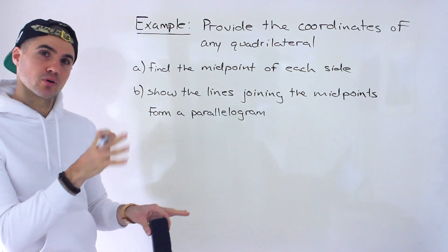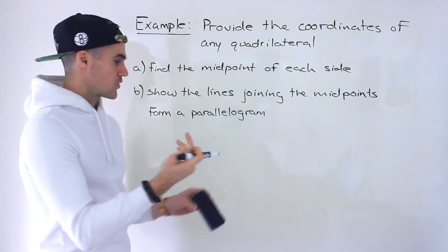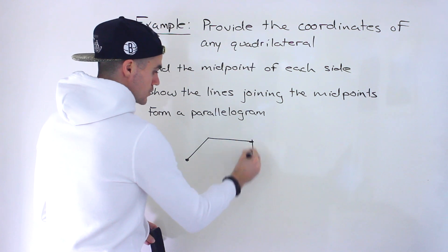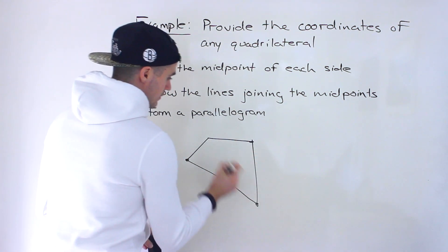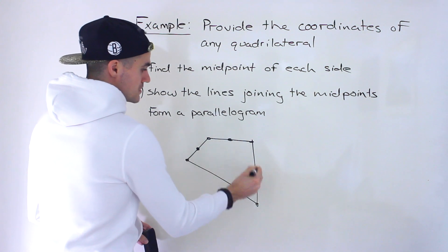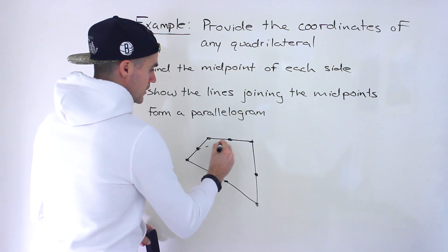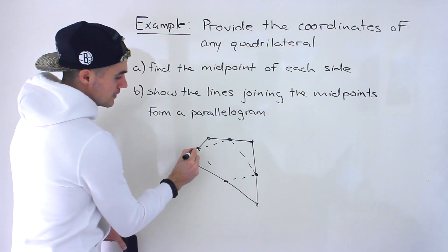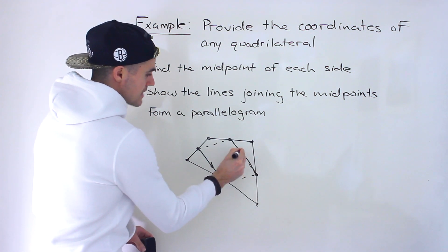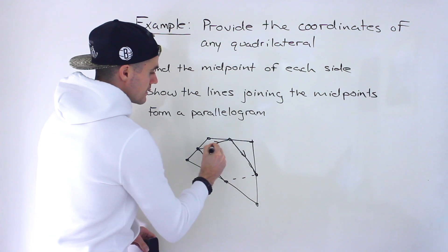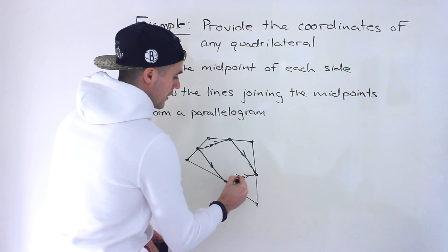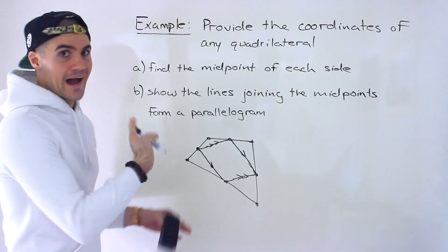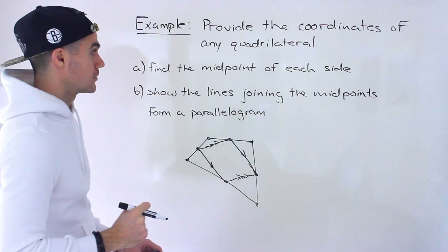We went over this property in a previous video, where we generally described it that if you draw any quadrilateral and then you find the midpoints of each side and join the midpoints, a parallelogram is always going to be formed — meaning that this side and this side are going to be parallel, and then this side and this side are going to be parallel. We're going to verify this property now with actual numbers, and it's just going to be random numbers that we pick.